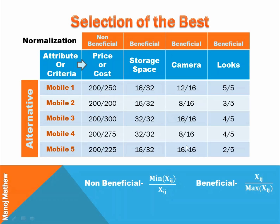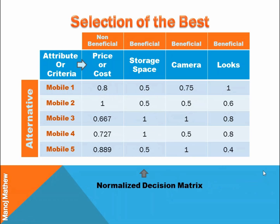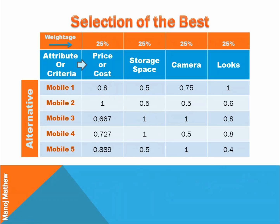We do the same for all other criteria, and on solving we get a normalized decision matrix. The next step is to assign weightage to the criteria. In this example, I have allotted equal weightage to all criteria — cost, storage space, camera, and looks are all equally important to me. It can vary person to person; for some selfie lovers, camera will have a higher weightage — they may assign camera a weightage of around 50 to 60%. One important thing to note: the sum of all weightages is always 100 or 100%.